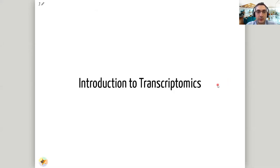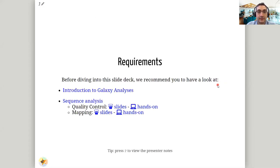Hi everyone. Today we will be discussing a bit about transcriptomics and how to do RNA-seq data analysis using Galaxy. This is going to be a very short introduction on transcriptomics so that we can identify a few of the basic concepts before we move on to the hands-on part of the day. Before going through the details here, which you can find in the Galaxy training page, it would be nice to have an introduction to Galaxy analysis, how it works, and also how to do overall sequence analysis. There are some very good slides about quality control and mapping that you can find there.